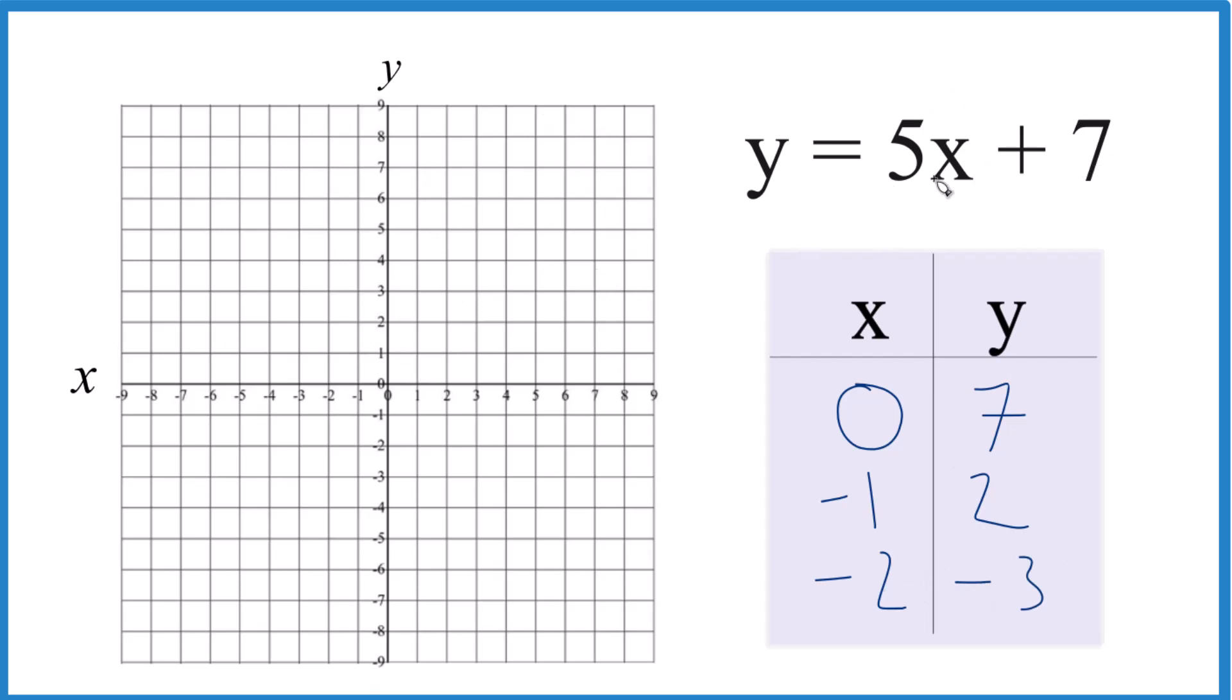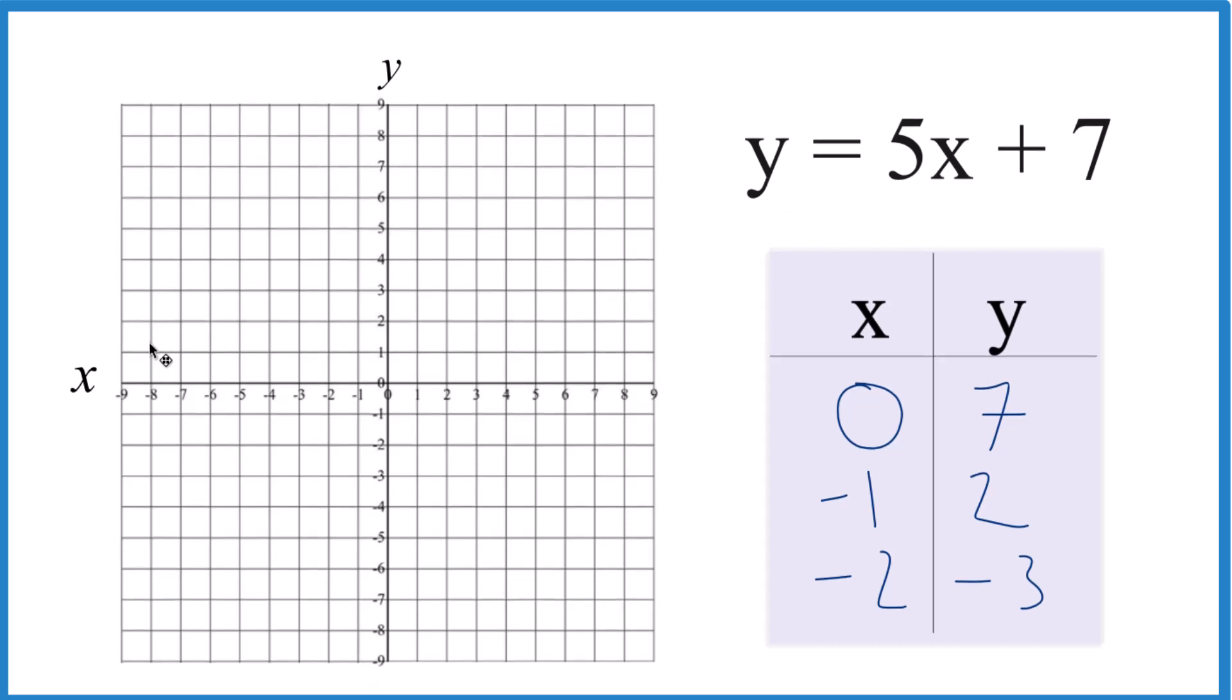We graph them here, and we'll get the line for y equals 5x plus 7. So how about we go to x is 0, y is 7. x is 0, y is 7, that's our first point. x is negative 1, y is 2. Negative 1 and 2. Second point.